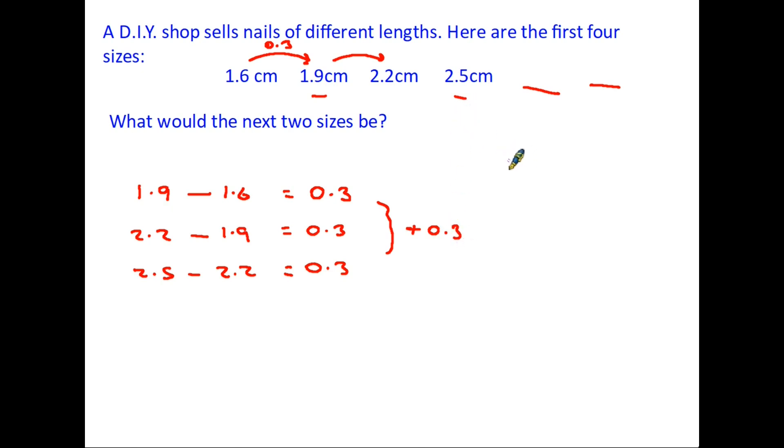So to find the next two numbers we have the last number here 2.5, we have to add 0.3 so this is going to go up by 0.3 and you would arrive at the answer 2.8 centimeters and again if we take 2.8 and add 0.3 we end up with 3.1, so our final answer is 3.1 centimeters. It has followed the pattern of going up by 0.3.